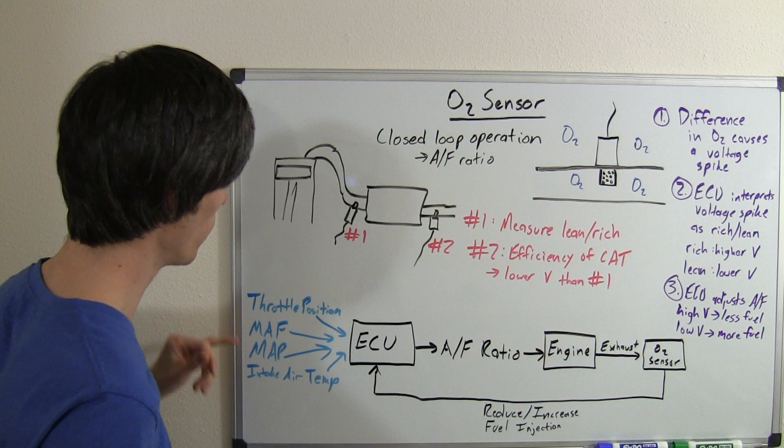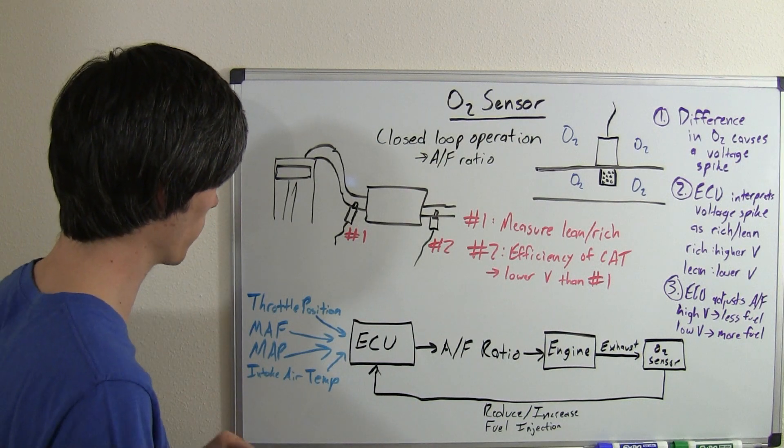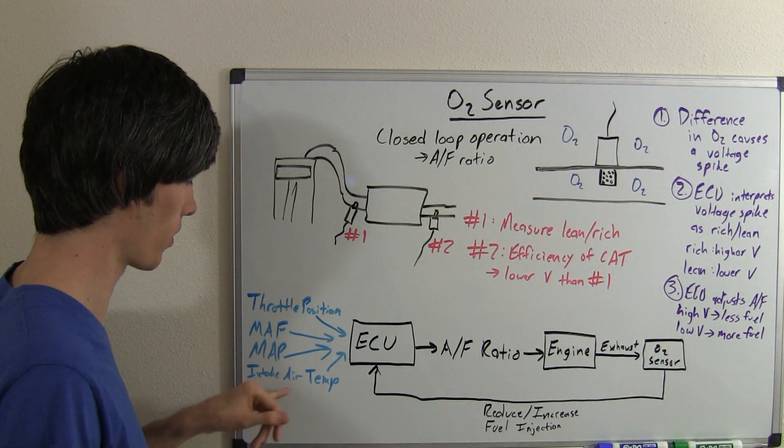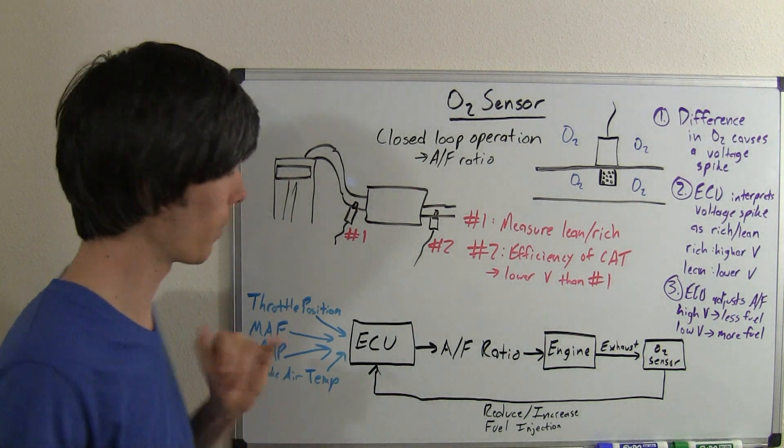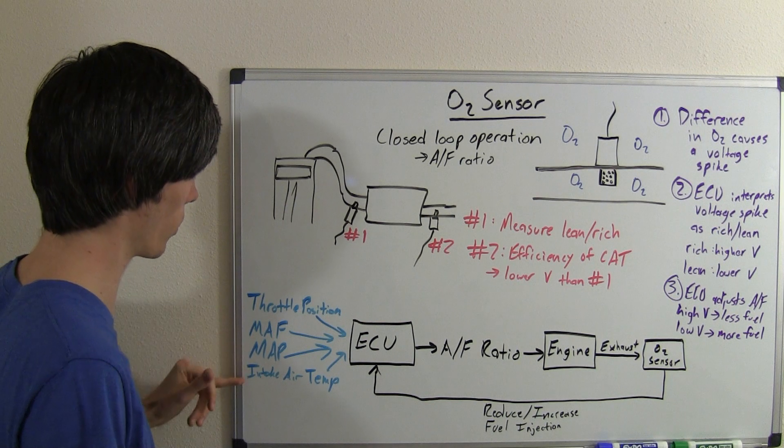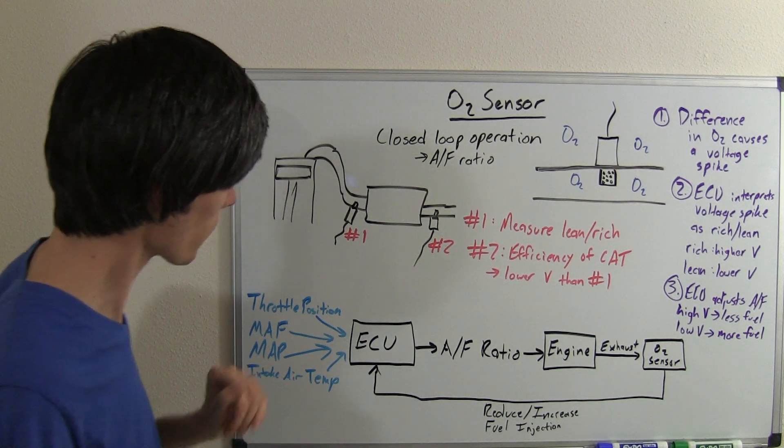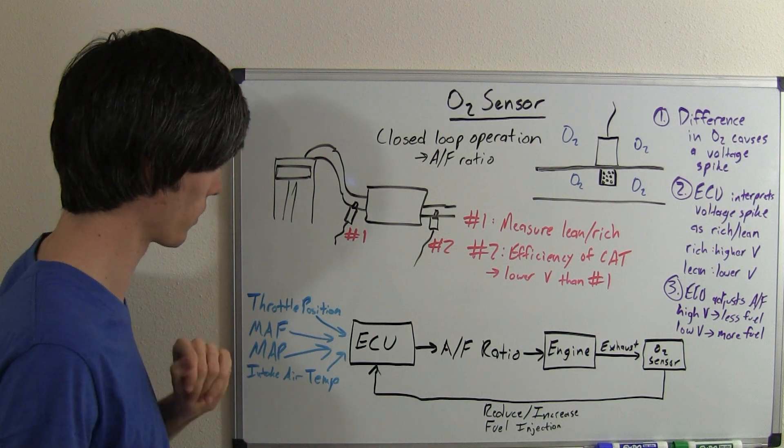Your ECU is going to take information from multiple sources, examples being the throttle position sensor, MAF sensor, MAP sensor, air intake temperature sensors. By the way, if you are curious, I have videos on all of these, except for the air temp sensor that's just a thermometer, that you can check out. I'll also have links in the description.